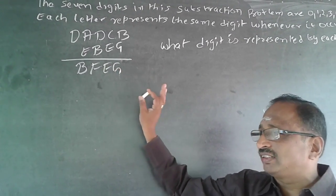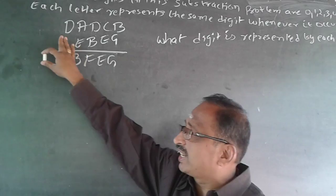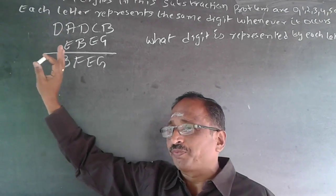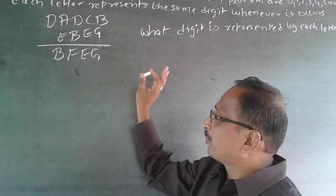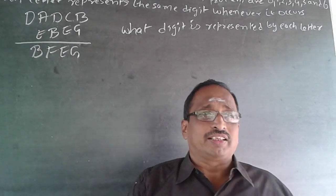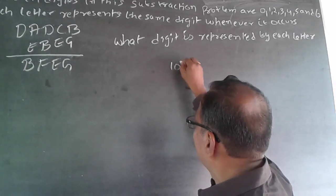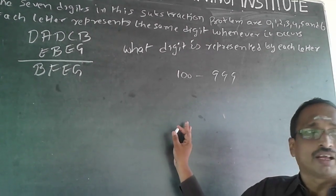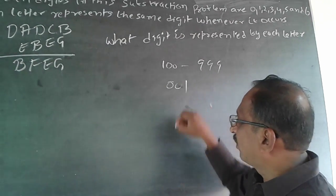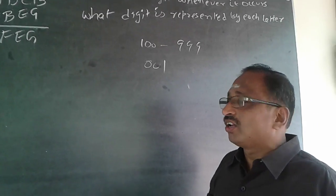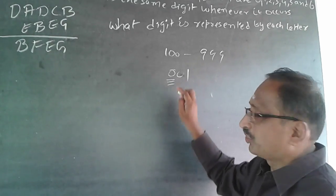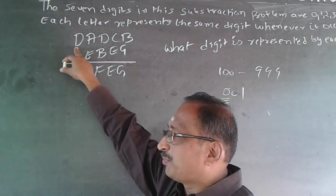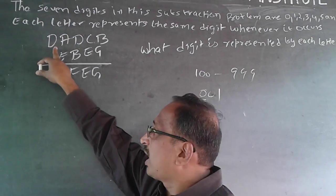The easier way of understanding this is, this leading D is getting eliminated. So the D value can be easily found out. Supposing I ask you to write any 3-digit number — you will write it as 100 to 999. I will never write a 3-digit number as 001. So no number will begin with 0, which means D is not 0.